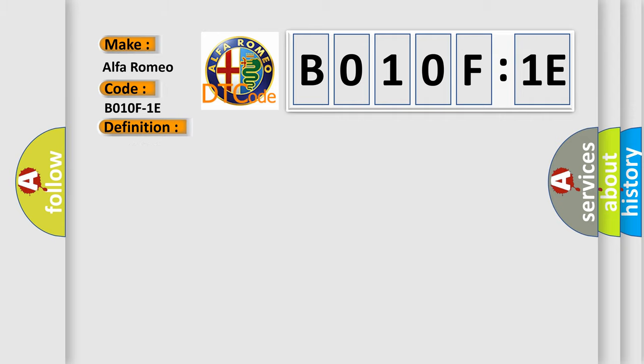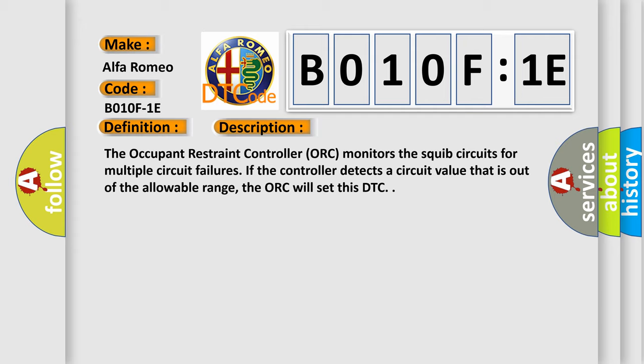And now this is a short description of this DTC code. The occupant restraint controller (ORC) monitors the squib circuits for multiple circuit failures. If the controller detects a circuit value that is out of the allowable range, the ORC will set this DTC.